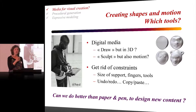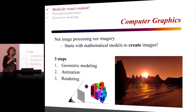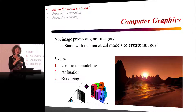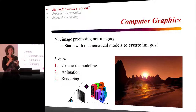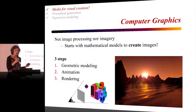We can undo, redo, copy, paste. So really the question is: can we do better than paper and pen to design new content and express imaginary shapes? The field I belong to is computer graphics. Computer graphics is not at all image processing, because we don't start with an image — the image is the output. We start from a mathematical model of a 3D shape, maybe in motion, and the goal is to create an image: this visual representation I was talking about.